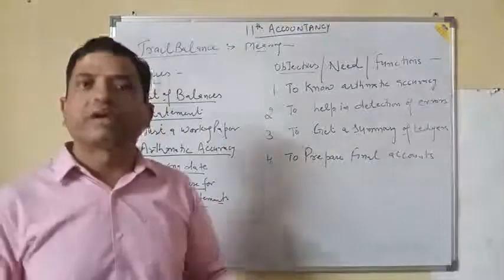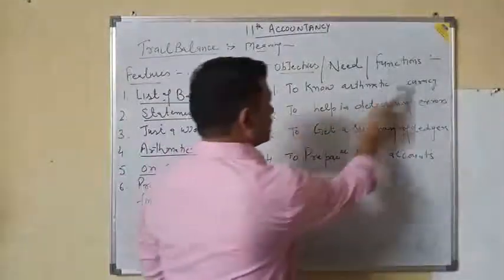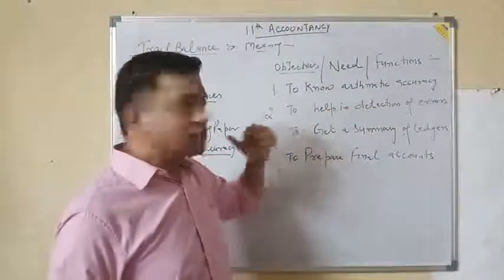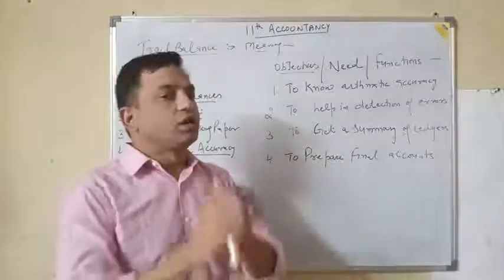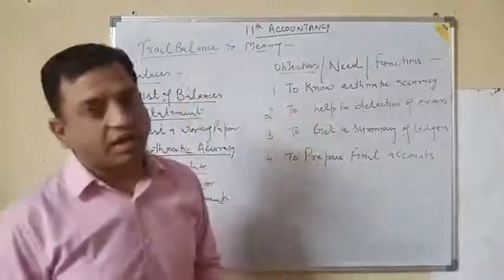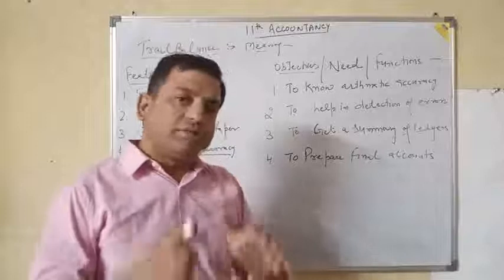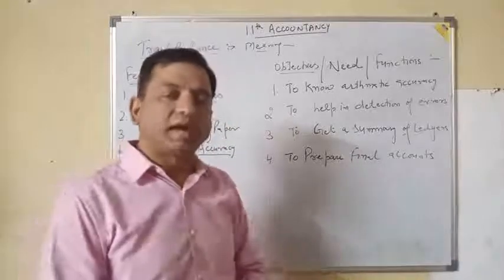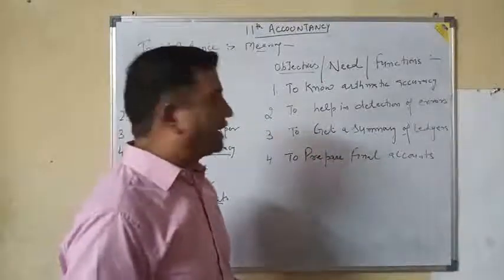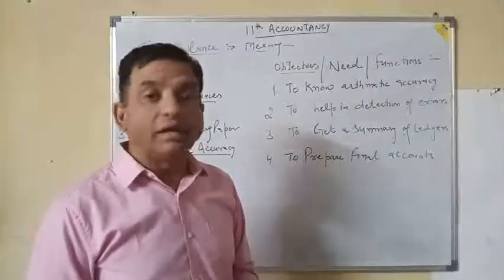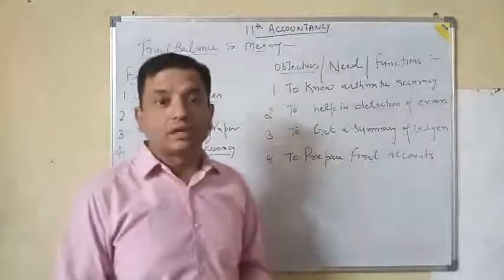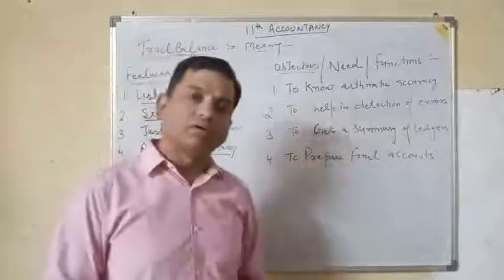Now let us discuss the objectives and functions — why we prepare the trial balance. The very first objective is to know the arithmetic accuracy. When both sides of the trial balance agree with each other, it means every transaction has been recorded and if any aspect has been recorded on the debit side, its credit aspect is also recorded. Second, it helps us find out errors — if both sides of the trial balance do not agree, then there may be some errors and we will find and correct those errors.